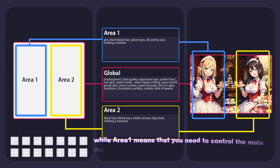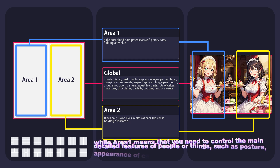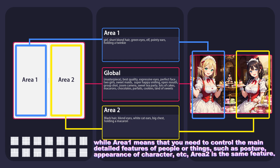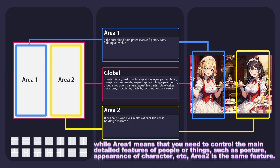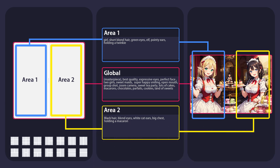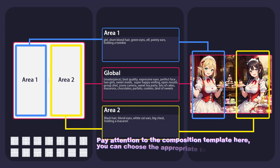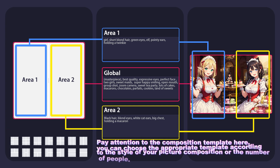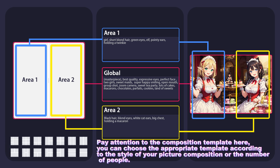Area 1 is used to control the main detailed features of people or things, such as posture and appearance of character, etc. Area 2 has the same feature. Pay attention to the composition template here — you can choose the appropriate template according to the style of your picture composition or the number of people.